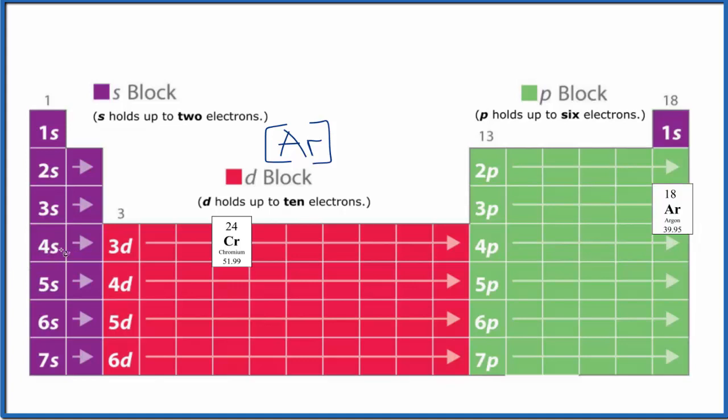We have 4s1, 4s2, and then we're going into the d: 3d1, 2, 3, 4. So we would expect that this would be the electron configuration for chromium, except chromium is an exception. It's an important exception, like copper.